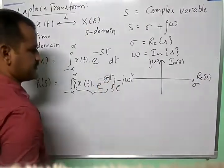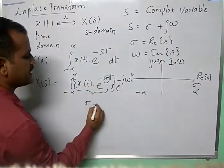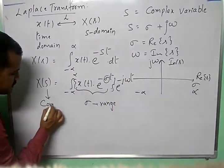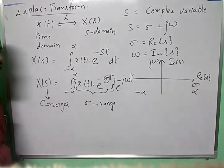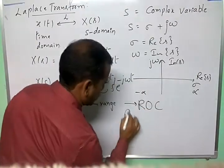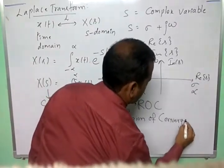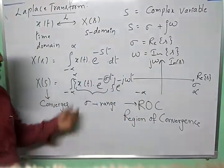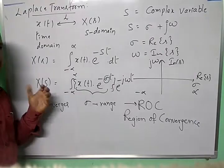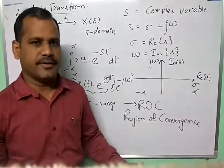The sigma value ranges from minus infinity to plus infinity. The range of values of sigma for which X(s) converges is called the Region of Convergence, or ROC. For a signal X(t), the range of values of sigma for which X(s) converges is called the ROC. A detailed discussion of ROC will follow in the next video. Let us meet in the next video.